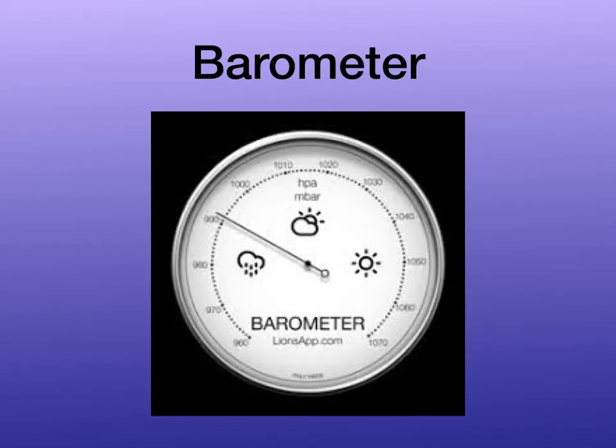This next weather tool is called a barometer. This weather tool measures air pressure. Meteorologists or weather forecasters use barometers to help them predict the weather. Usually, low air pressure — which we can see on the left side of the barometer — means that it will be cloudy and rainy, and on this barometer it has a helpful little image of a rain cloud on the left side. High air pressure, which is on the right side, means that the weather will be clear, and on the right side it has a picture of a bright sun.